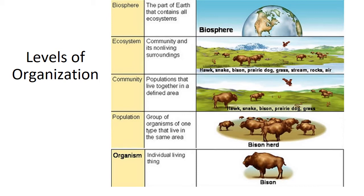The ecosystem is when you bring the abiotic together with the biotic. So the ecosystem includes all those living things plus the rocks, air, soil, water, temperature, and sunlight. The biosphere is anywhere on earth where there's life — above the earth in the air, below the earth in the soil, or on the earth itself. Anywhere there's life, it's the biosphere.